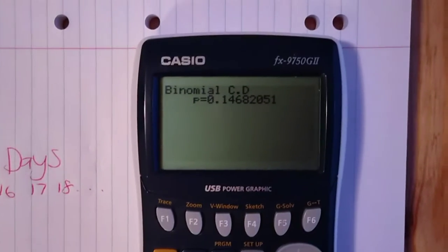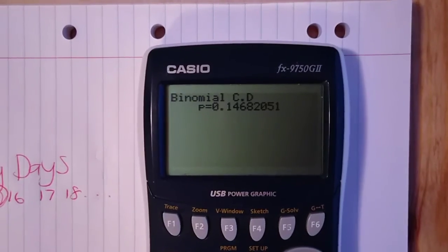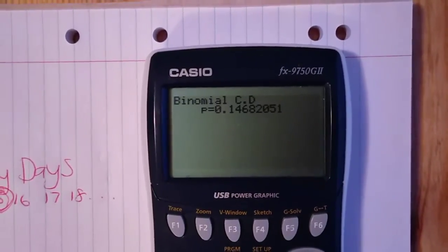And when we click that, we can see the probability of five or less non-sunny days is 0.1468.